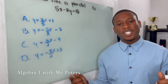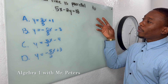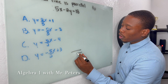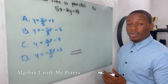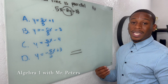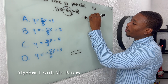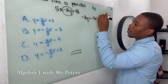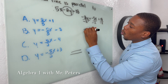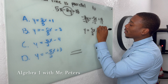Moving on to the last problem — it asks which line is parallel to 5x − 2y = 18. Parallel lines run next to each other and never intersect, so they have the same exact slope. We put this in slope-intercept form by isolating y: −2y = −5x + 18, then divide by −2, giving us y = (5/2)x − 9.